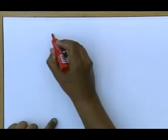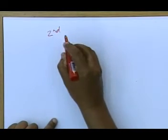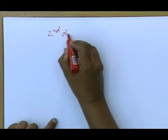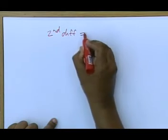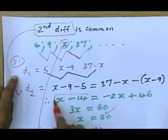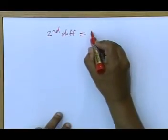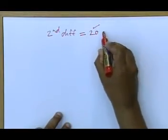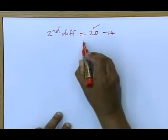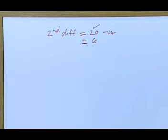But what is very important is that the second difference is common, and we found that second difference. Let's just ask ourselves, what was the second difference? The second difference, if you go back to what we had, was x minus 14. So if I take x's value as 20 minus 14, then that second difference is 6.